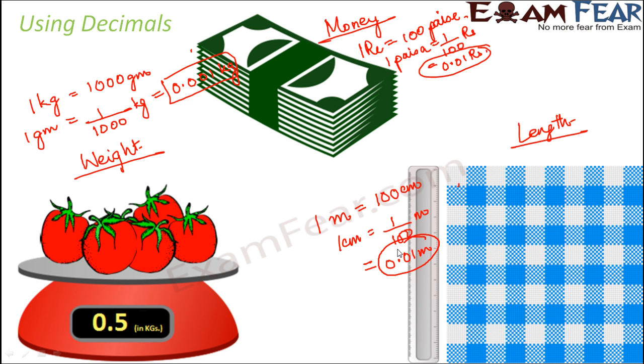So you see, you make use of decimals in all of these. For example, you talk about weight, you talk about 7.25 kgs, you talk about length, you say 15.75 meters. So in this fashion, we very often make use of decimals while measuring weight or length or money matters.